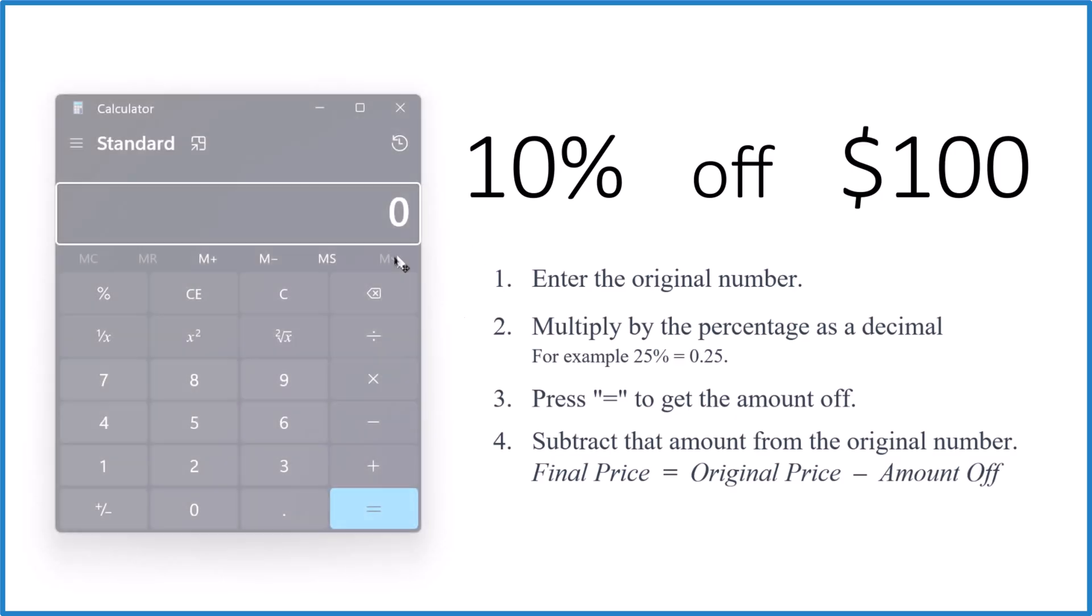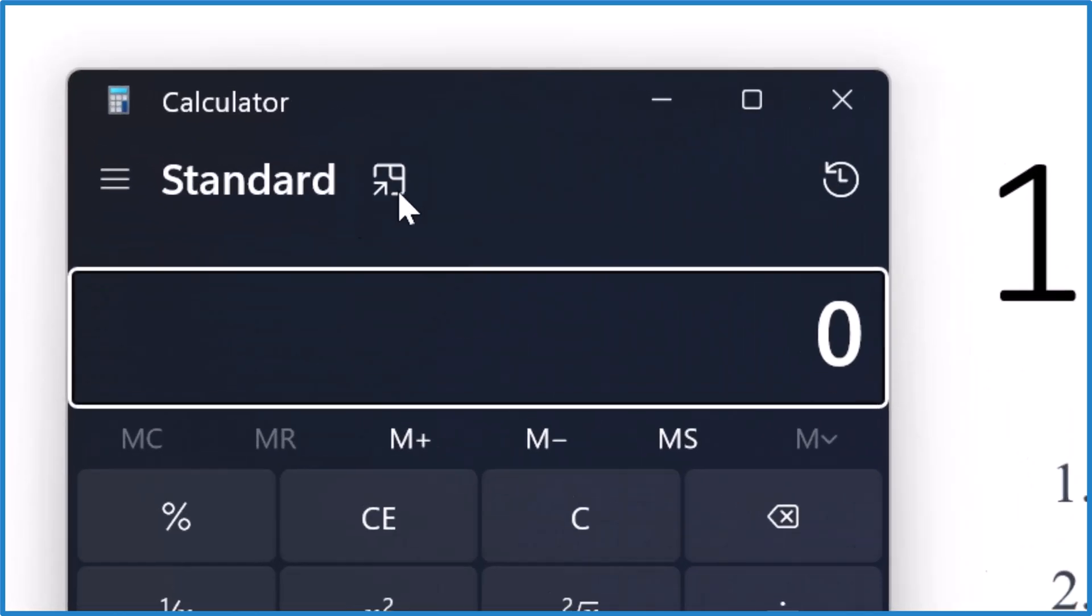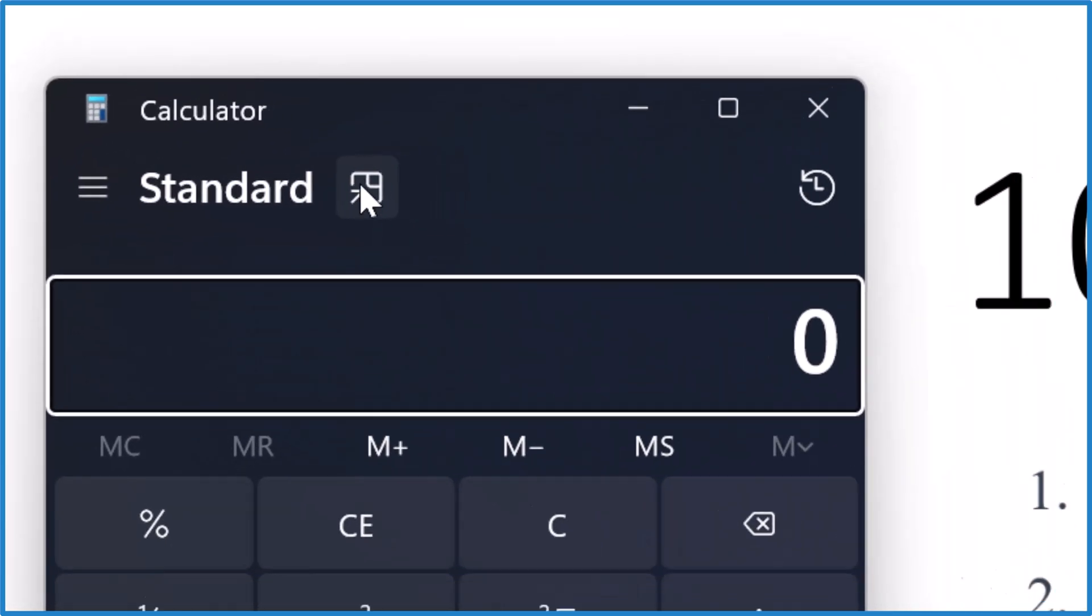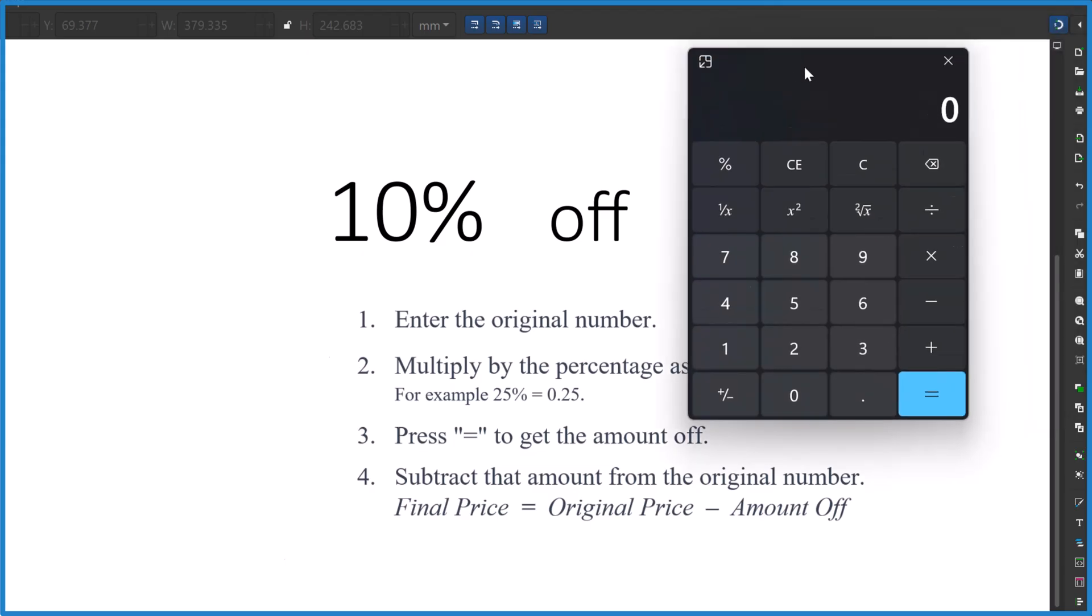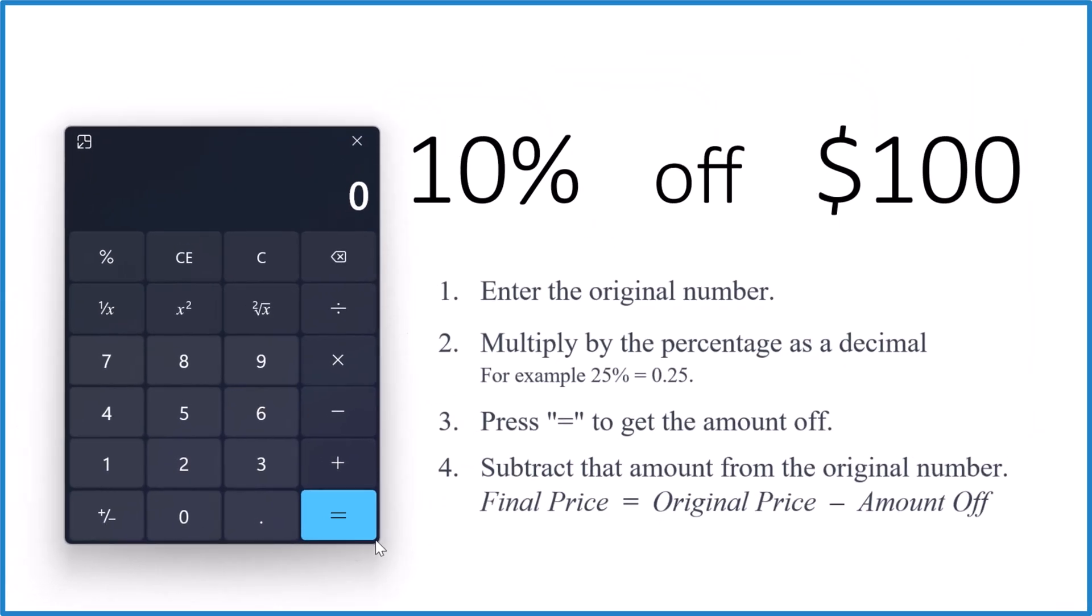You open the calculator and then right next to where it says standard, there's this little icon with the arrow. Click that and it moves it over here, but you can move it back. You can resize it however you want.